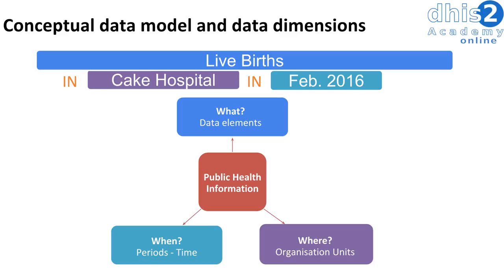To summarize what we have discussed in this presentation, we have three core data dimensions, or building blocks, within DHIS2. This includes the WHAT, which we refer to as data elements in DHIS2; the WHERE, which are called organization units; and the WHEN, which refers to our periods. For example, live births is the data element we are collecting, collected within CAIC Hospital — that is where we are collecting the data from — in February 2016, which is when this data item was reported. At minimum, these three aspects are attached to all data values within DHIS2.